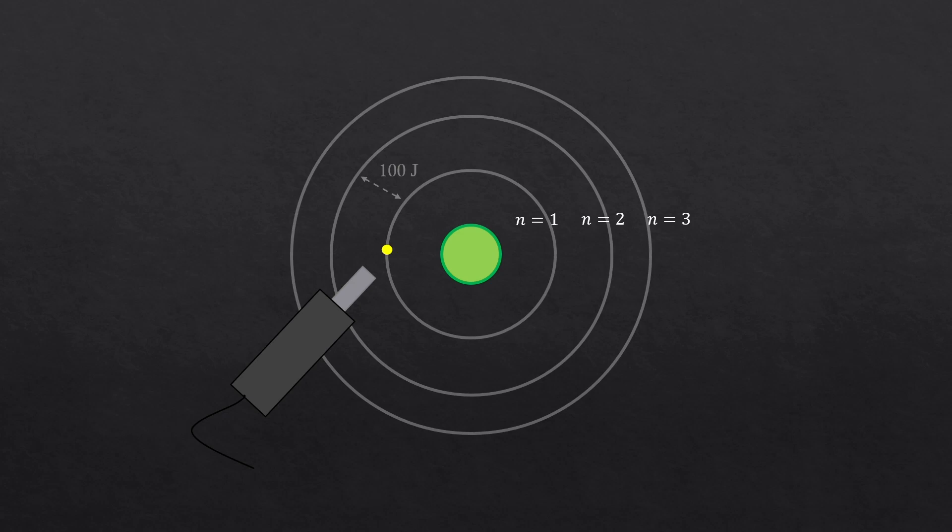I mean, 10 joules is something, at least one-tenth of the amount needed. So shouldn't it at least move up by one-tenth of it? That's the point. Unless we exactly provide 100 joules of energy to the electron, the electron won't do anything.